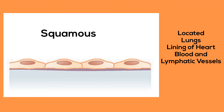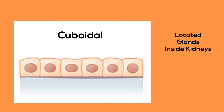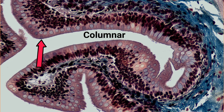Next are cuboidal. These look like a cube because they have basically an equal width and height. You can many times find these in your glands. And finally, columnar are tissues that are just like a column — their height is greater than their width.